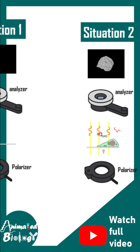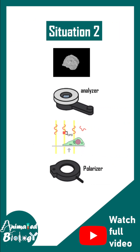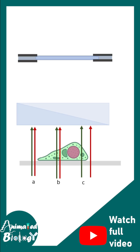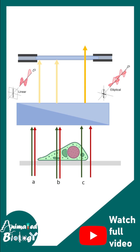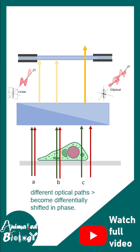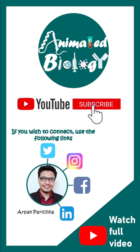When the analyzer and polarizer are mutually perpendicular — that is, in a crossed state — there is no image formation. But when a cell is placed between these cross-configured elements, an image of the cell appears against an otherwise black background. Rays that have an optical path difference acquire elliptical polarization and can pass through the analyzer, while other rays are blocked. This creates differences in optical paths, ultimately changing the phase and amplitude in the image. To learn more, watch the full video.